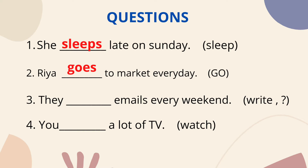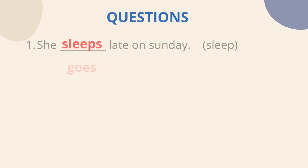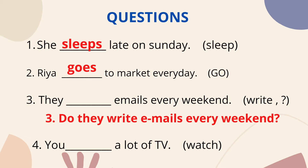Question no.3 — pay attention: 'They ___ emails every weekend.' We need to write an interrogative sentence. First make the positive: 'They write emails every weekend.' Now introduce a helping verb — 'do' comes before the subject in an interrogative. So the answer is: 'Do they write emails every weekend?'